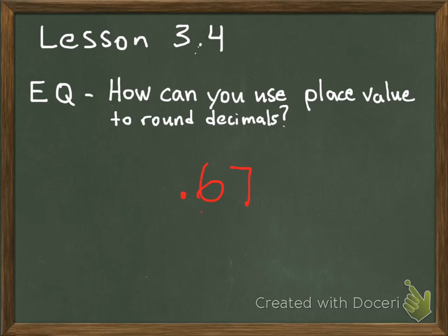Here's another example. We have the decimal 67 hundredths. If we're rounding 67 hundredths to the nearest tenth, the tenths place is underlined. This 7 is going to tell this 6 what to do. Since that 7 is 5 or more, it tells that 6 to raise up to a 7. The nearest tenth that 67 hundredths is closest to is 7 tenths, so 67 hundredths rounded to the nearest tenth is 7 tenths.